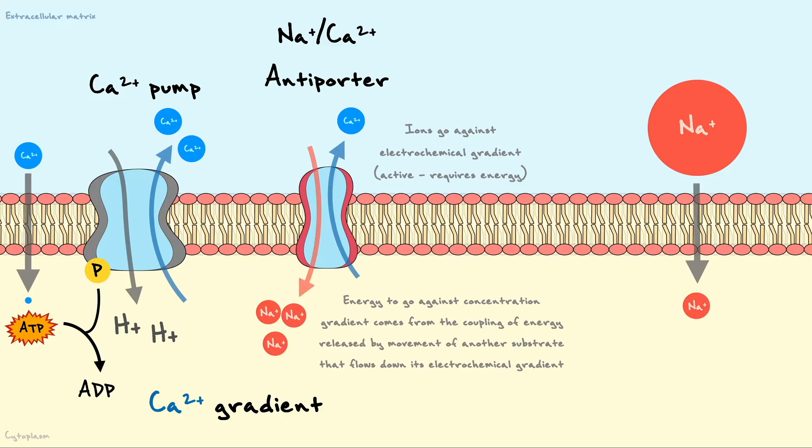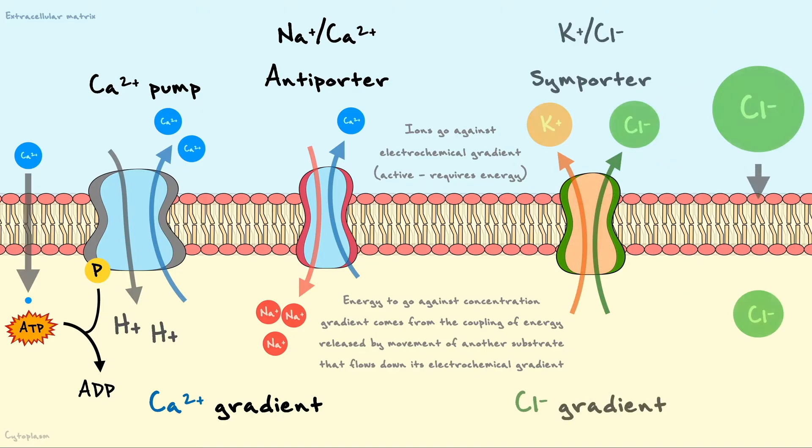In contrast to antiporters, which export and import ions, you can also find symporters, which either export or import ions in the same direction. For example, the potassium chloride symporter uses the movement of potassium to send chloride in the extracellular space. Here again, the protein uses the energy released by potassium flowing down its electrochemical gradient to fuel the process and extrude chloride.